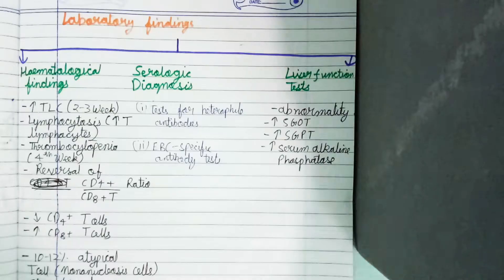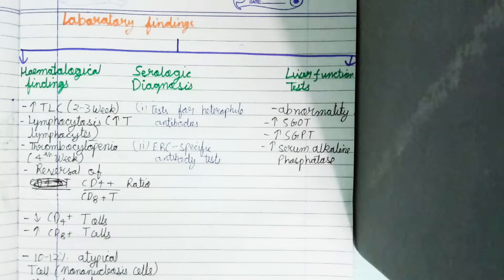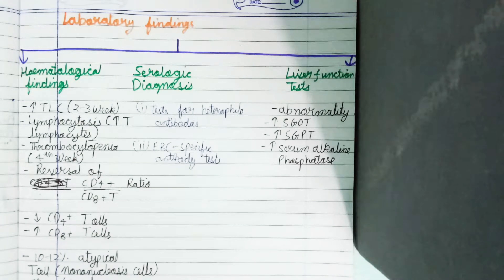Laboratory findings are divided into three parts: hematological findings, serological diagnosis, and liver function tests. Here the simplified forms are given.